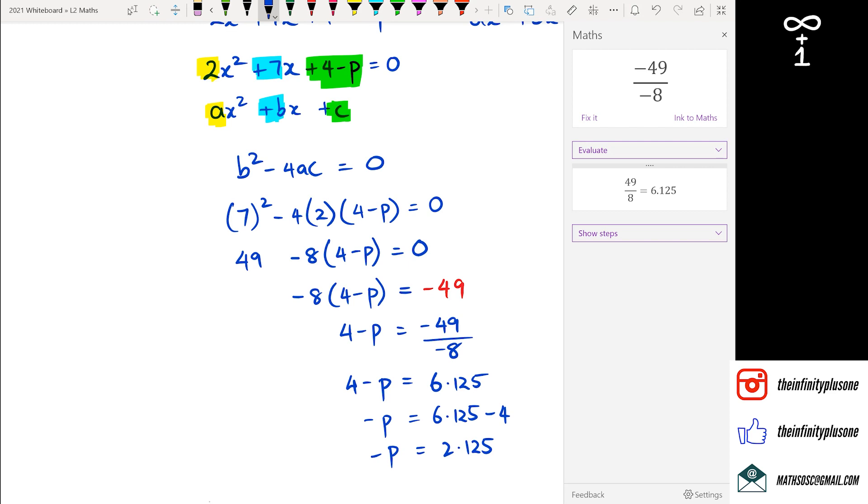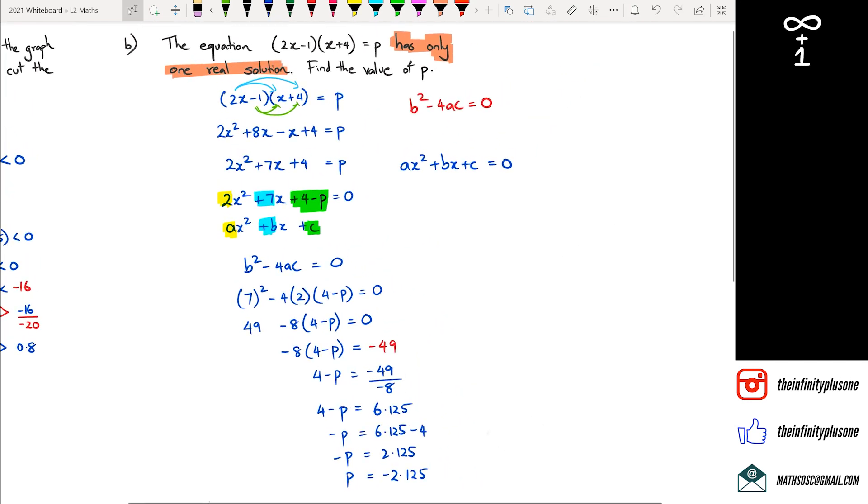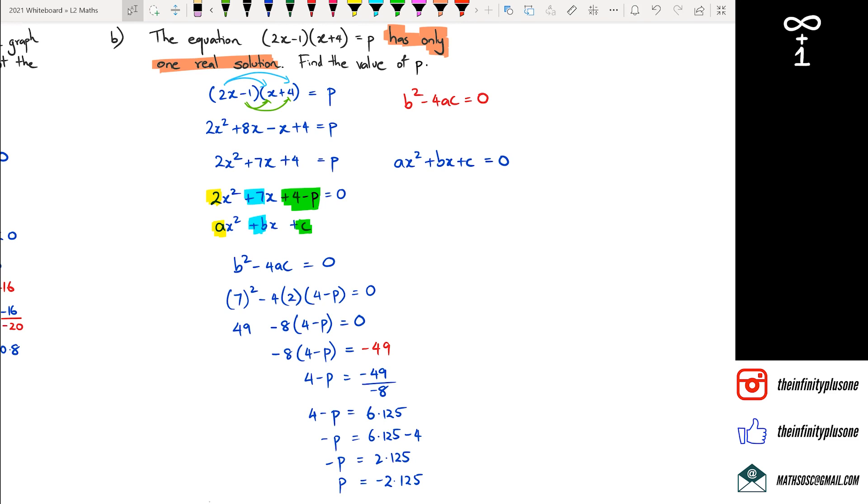And we've got negative p is equal to 2.125. Now remember, it is negative p. So I just got to get rid of the negative to the opposite side. And I'm going to get negative 2.125. So basically, for this question here, we can say that when p equals negative 2.125, this equation is only going to have one real solution.